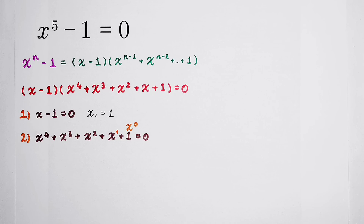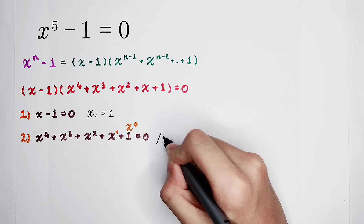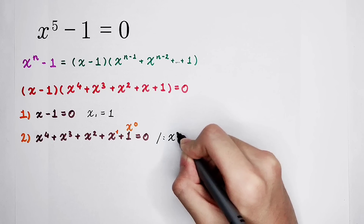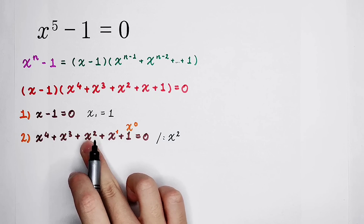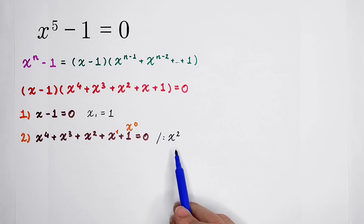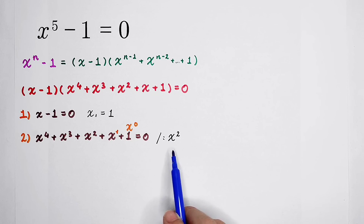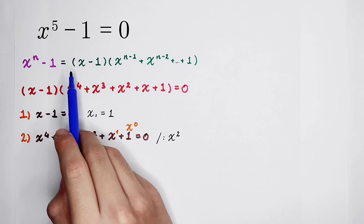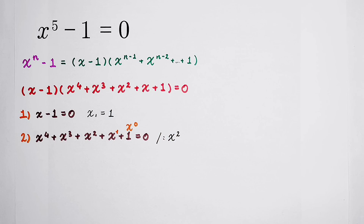Here comes a stunning idea: divide both sides by x squared, which is the middle term. It cannot be 0, meaning x cannot equal 0. When x equals 0, x to the power 5 minus 1 equals minus 1, not 0. So x can never be 0 — it is simple and easy to prove.